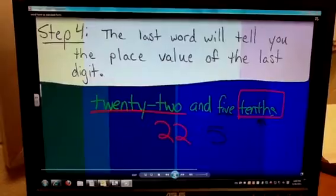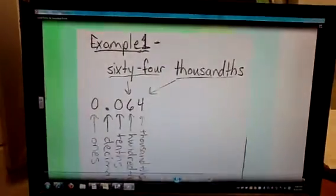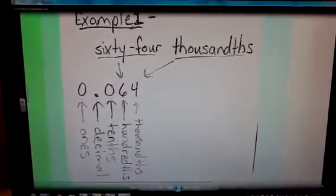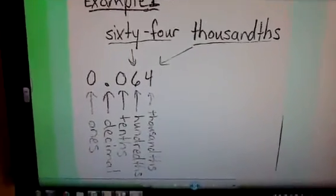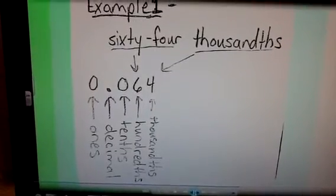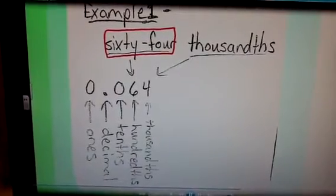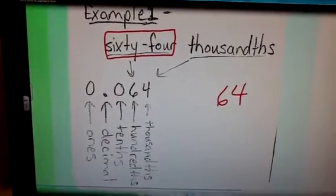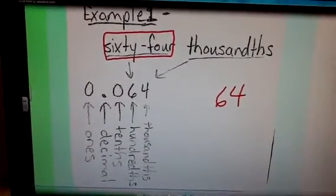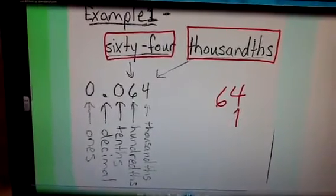Let's take a look at a couple more examples and see how we can also write it when there is not a word AND. The first example I have is sixty-four thousandths. You'll notice, again, by writing this word, we're skipping straight to step number three. We're writing the word form. We're converting it to standard form.